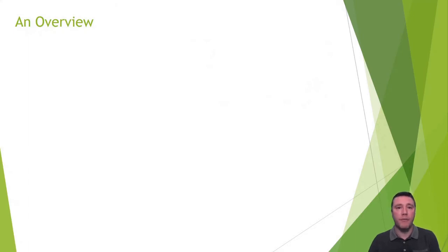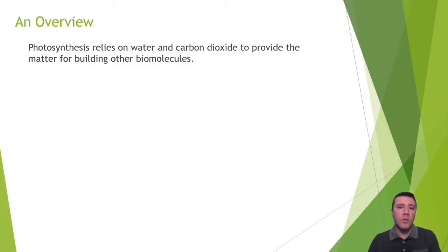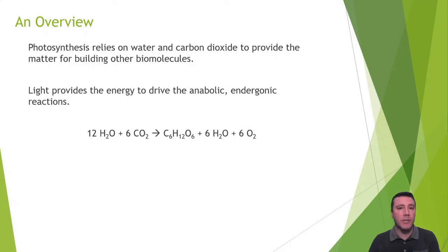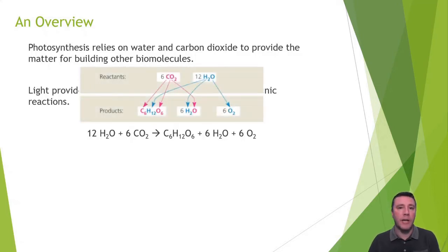Before we dive into the specifics of photosynthesis, let's take a look at an overview of it. The reactants of photosynthesis are carbon dioxide and water. Plants obtain the carbon dioxide they need from the atmosphere and water through their root system. Light energy from the sun is what drives the energy-storing endergonic reactions. This image illustrates how the atoms in the reactant molecules can be traced to their final destination. The carbon from carbon dioxide ends up entirely in the carbohydrate product, and carbon dioxide's oxygen ends up in both the carbohydrate and water products. The hydrogens from water end up in the carbohydrate product as well as newly formed water molecules, but the oxygen from water is used solely to form oxygen gas.